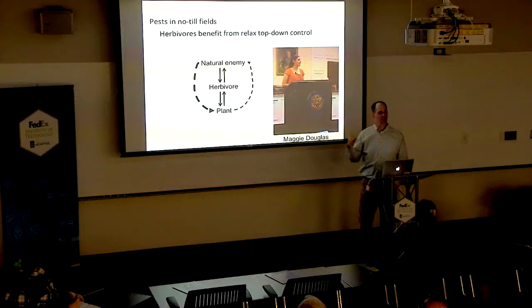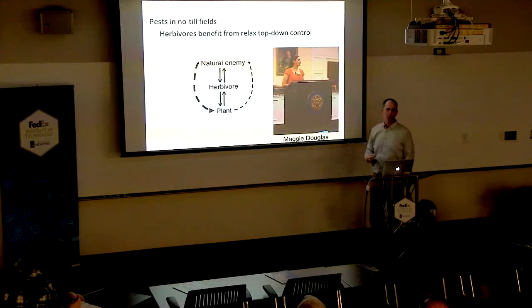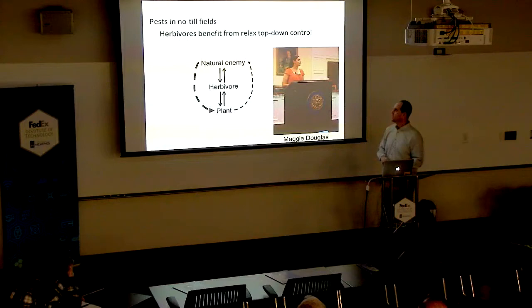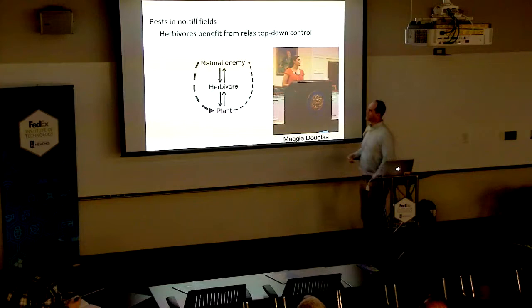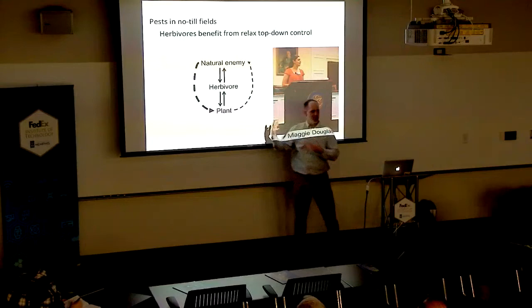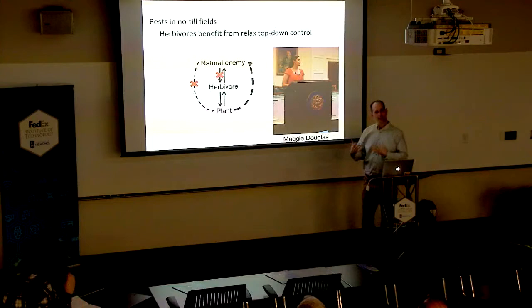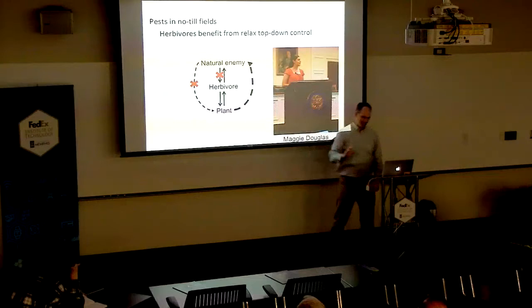The story I'm going to tell today starts with a PhD student named Maggie Douglas. This is Maggie speaking at a congressional briefing — we were invited down to Washington, D.C. to talk about her research, which just emphasizes that what she found is pretty cool. In this story, we're finding herbivores are benefiting from relaxed top-down control. In a simple tritrophic interaction, you would expect some direct and indirect interactions between these three types of players. What Maggie found is that because of a man-made imposition on an agricultural system, these connections are being messed up.